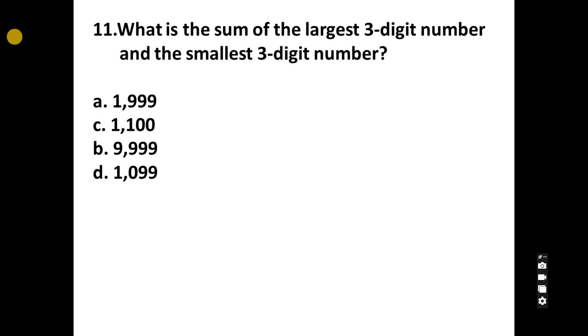11. What is the sum of the largest 3 digit number and the smallest 3 digit number? A, 1,999, B, 1,100, C, 9,999, D, 1,099.